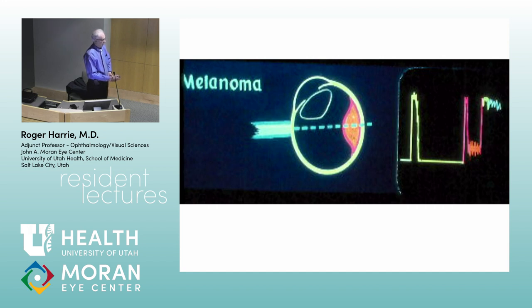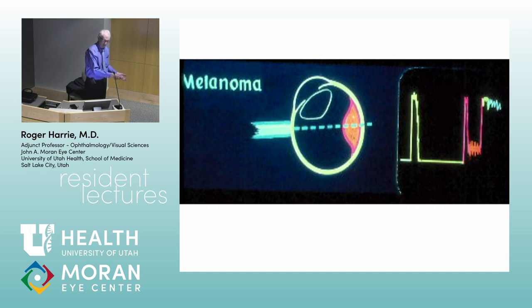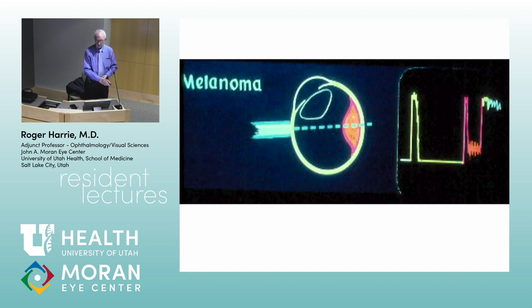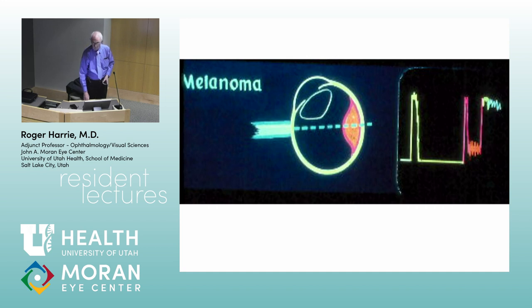Inside a melanoma on the A-scan, there are small ups and downs but not a huge variance — that makes sense based on the pathology of a densely cellular tumor. Then you get the sclera as another spike from a change in sound velocity. Beyond the sclera, the orbit has a lot of interfaces — fat, septa, muscles, nerves — so the orbit is high-reflective versus the vitreous, which is low-reflective.